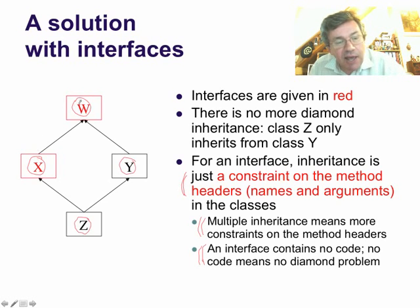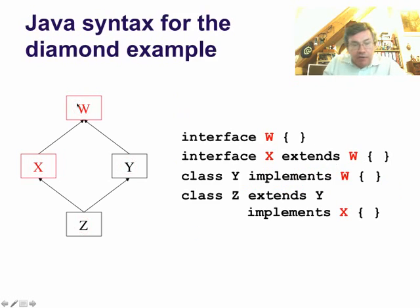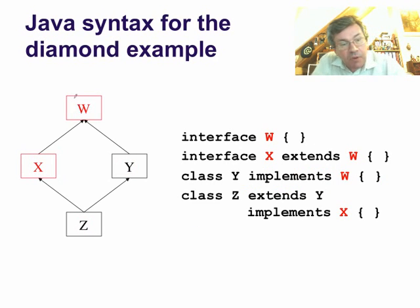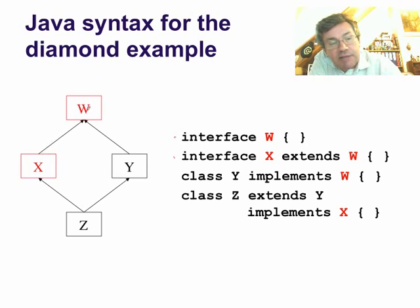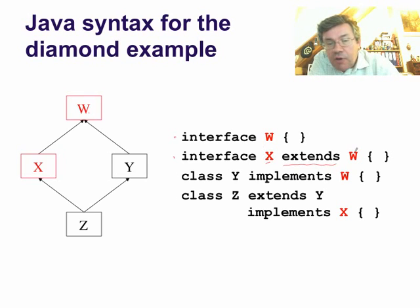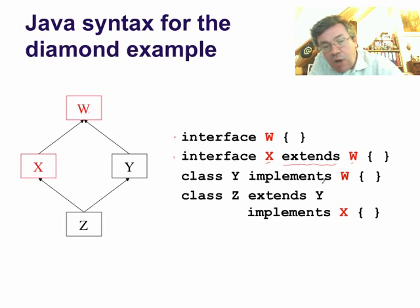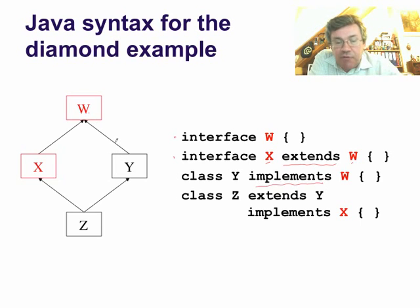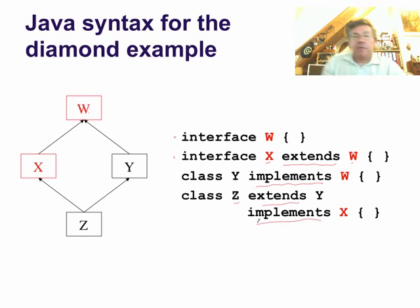In this particular solution, X and W are interfaces. Here's the syntax: interface W; interface X extends W; extends is used when both arguments are either interfaces or classes; class Y implements W; and class Z extends Y and implements X. That's the Java syntax for this solution.